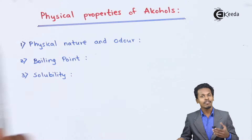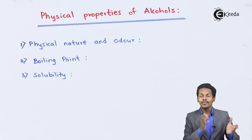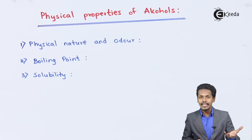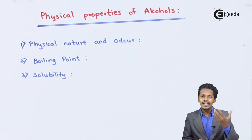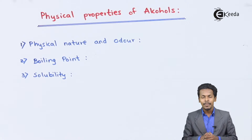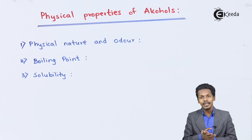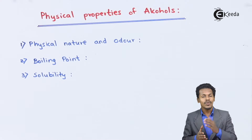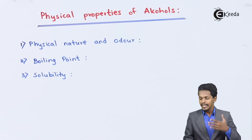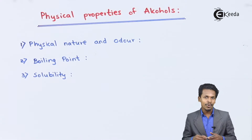Talking about the first point — physical nature and odor of alcohol — it has been found that alcohols which are lower members are colorless, in a liquid state, and have a distinctive or pleasant smell. But alcohols which have more than 12 carbon atoms are colorless, odorless, and solid in nature.